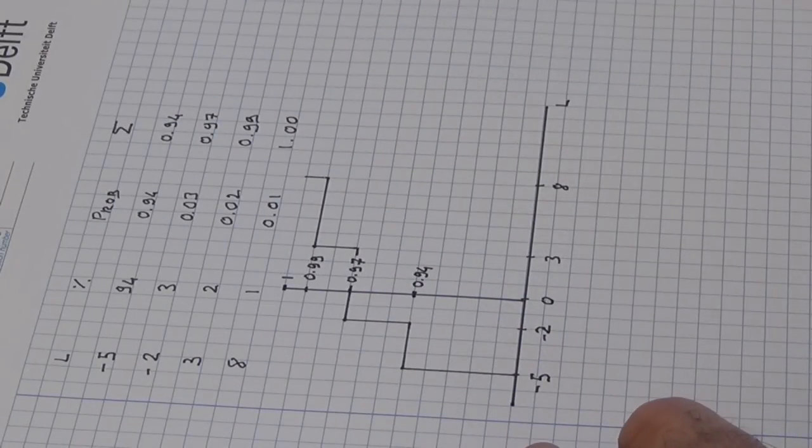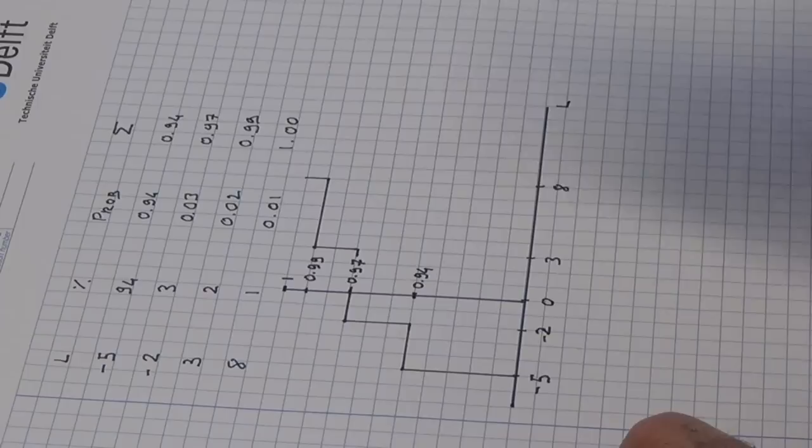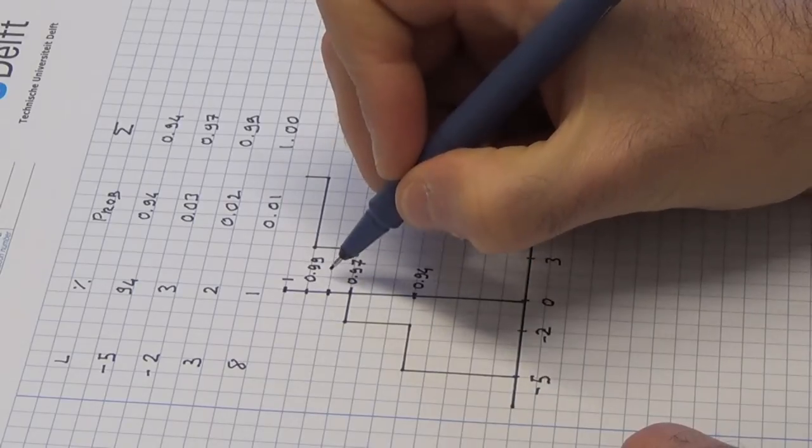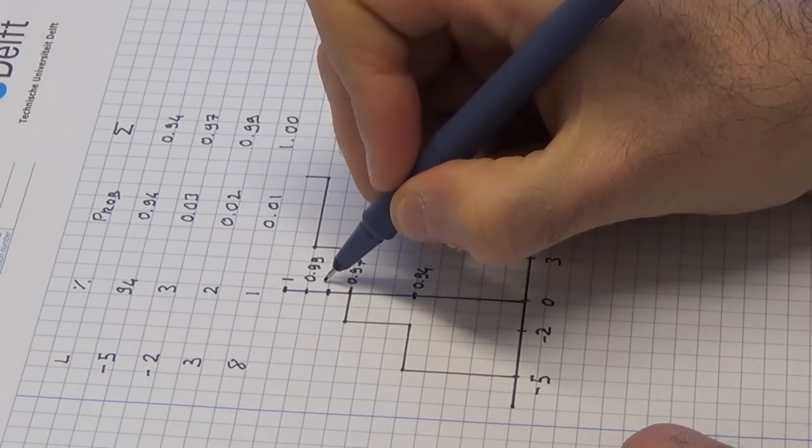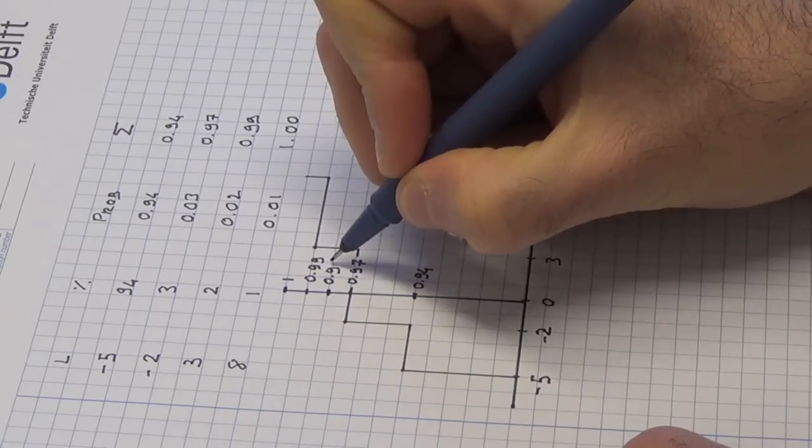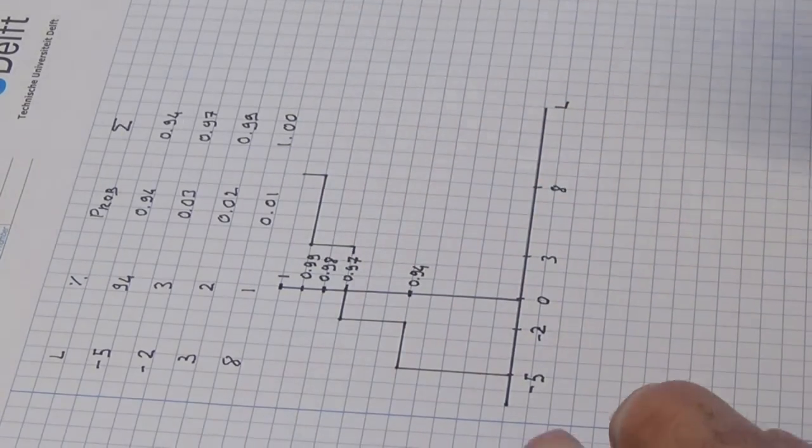Now, the first question asks us to find the one-year 0.98 VaR. The trick is really simple. Let's consider the y-axis. Is 0.98 there? No.